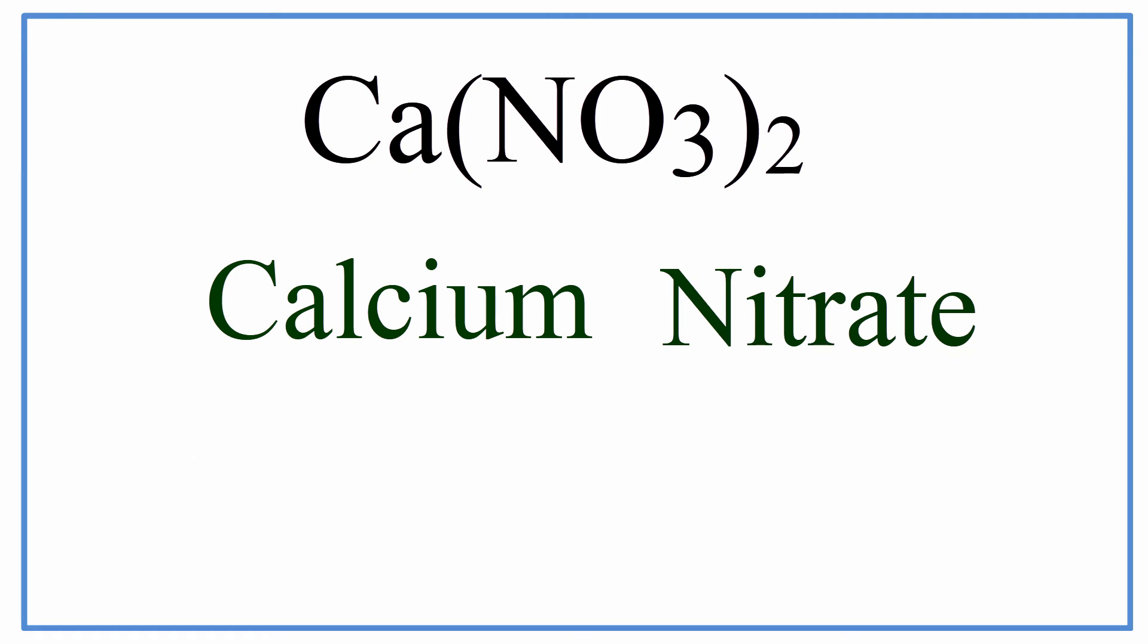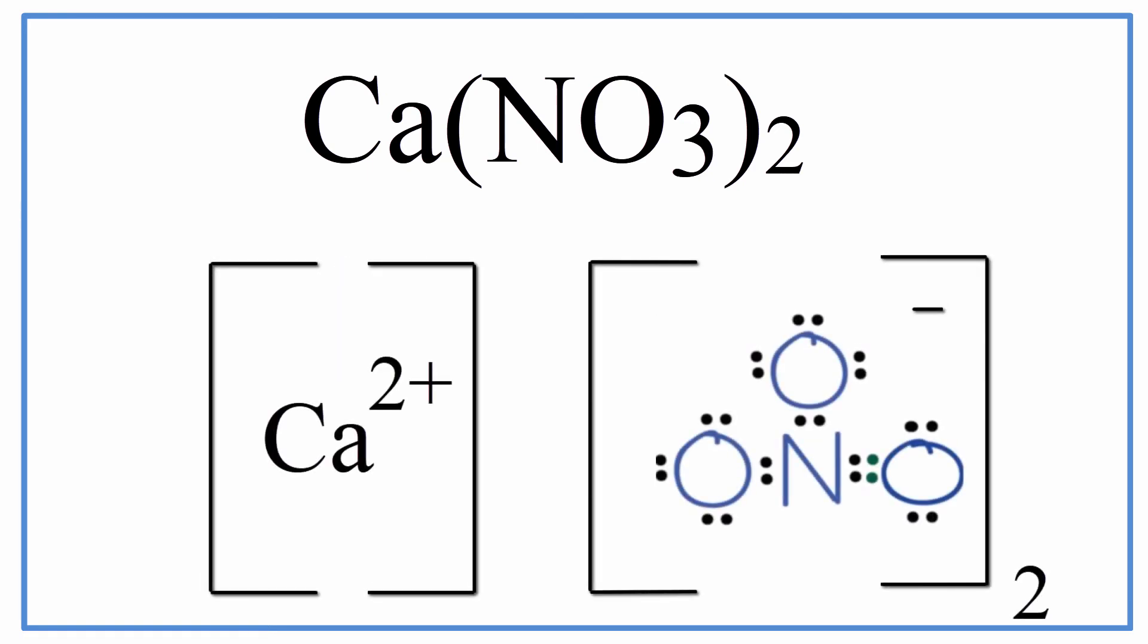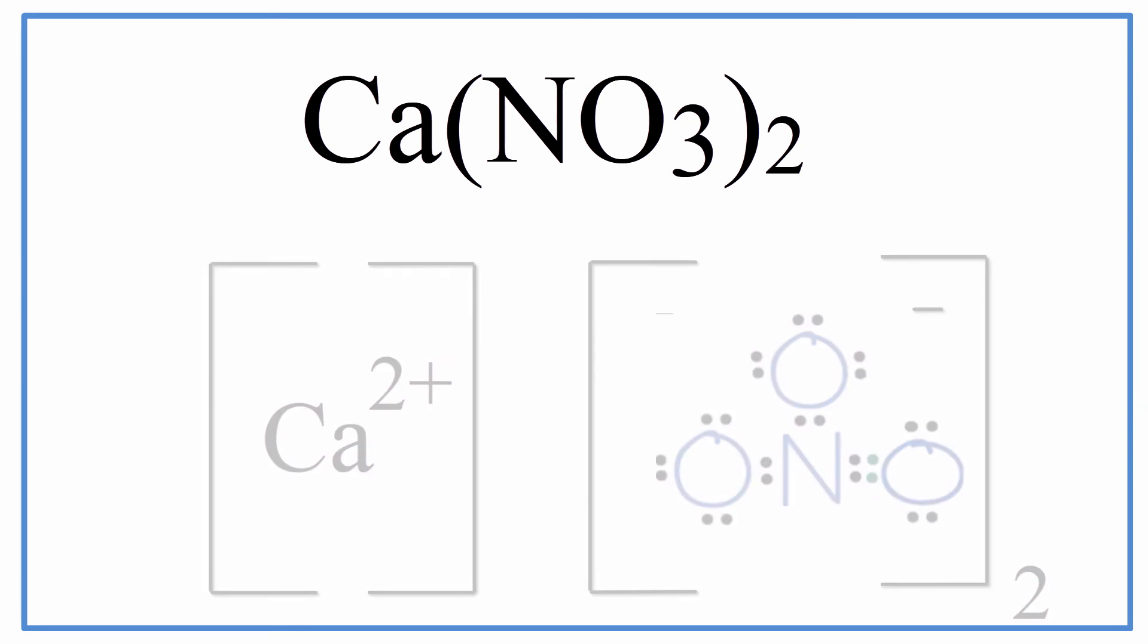We can represent this with a Lewis structure, and that might look something like this. Note that Ca(NO3)2, calcium nitrate, is normally found as a crystal, and these are just representations of a single formula unit.